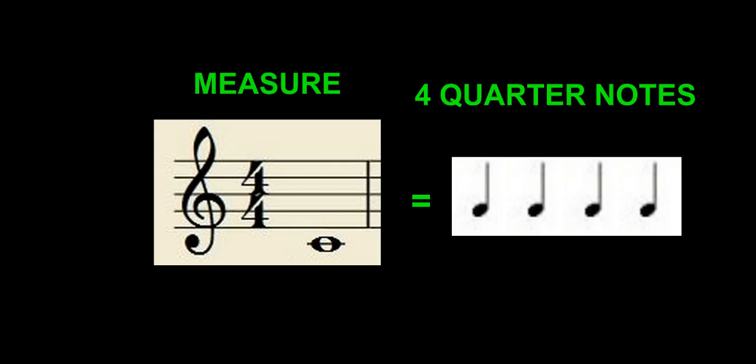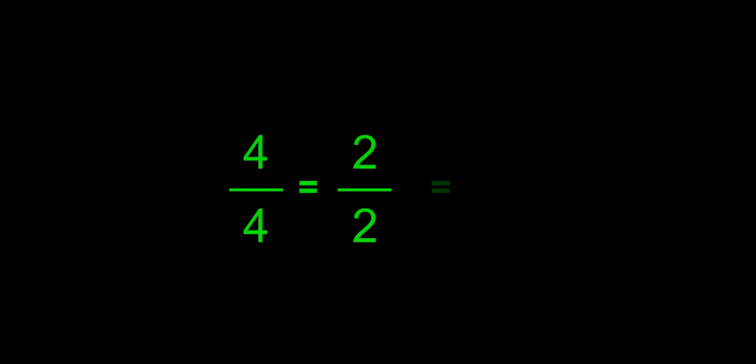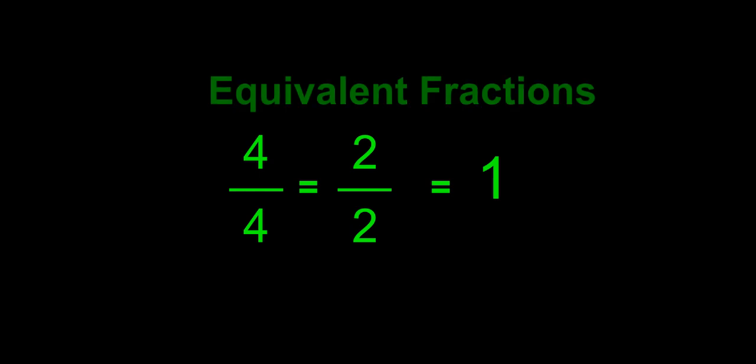Because a quarter note is a quarter, or one fourth of a whole note, it takes four of them to equal a whole note. And remember that a whole note is equal to two half notes, so four quarter notes equals two half notes as well. We can write this mathematically: four quarters equals two halves, which equal one whole. And here we go with equivalent fractions.